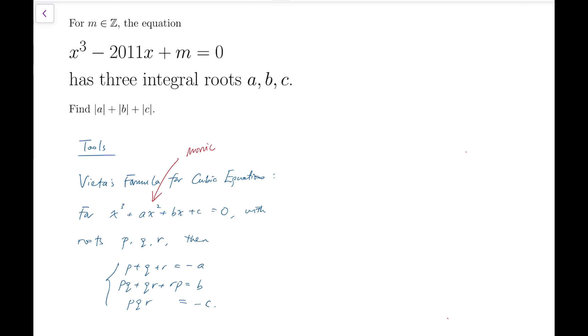The first is that the sum is minus a, negative of the coefficient of x squared. Then pq plus qr plus rp, we choose two of them from the three roots, so we have three combinations, and we multiply each case and add them up. It's a symmetric sum. This is equal to b, the coefficient of x. And finally, if we multiply all three of them together, then it's equal to minus c, where c is the constant term of the cubic equation.